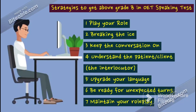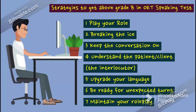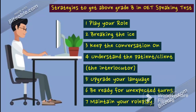Let us see the seven strategies to get above Grade B in OET speaking test. The first one: play your role. Second one: breaking the ice. Third one: keep the conversation going. Fourth one: understand the patient or client — that means the interlocutor. Fifth one: upgrade your language. Sixth one: be ready for unexpected turns during your OET role play. The last one: maintain your role play. When you are practicing your role play for the speaking examination, please keep these tips in mind.